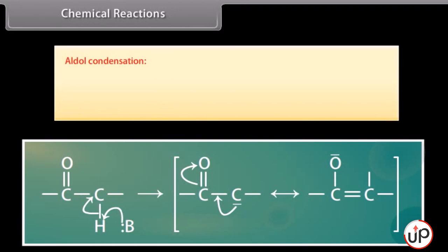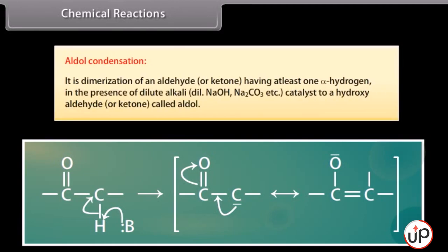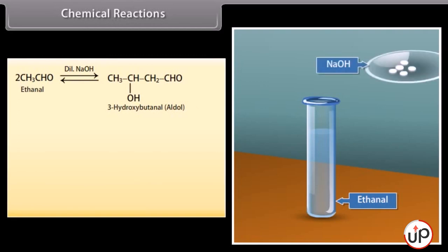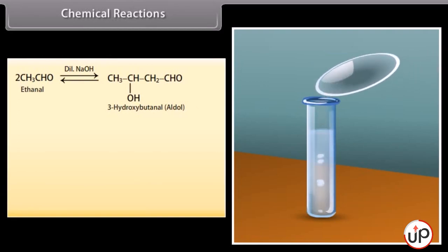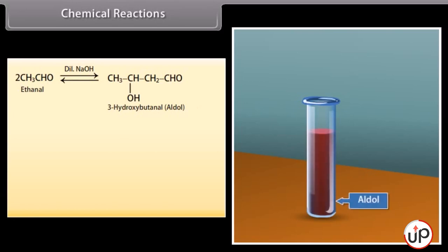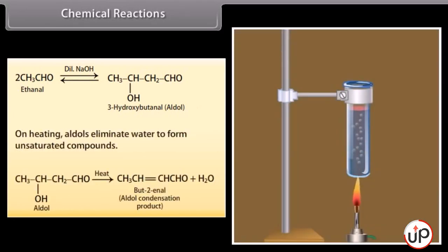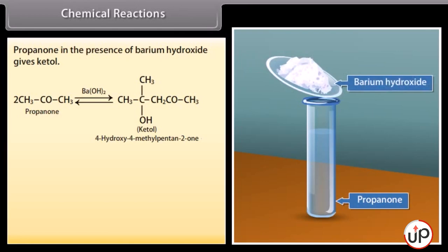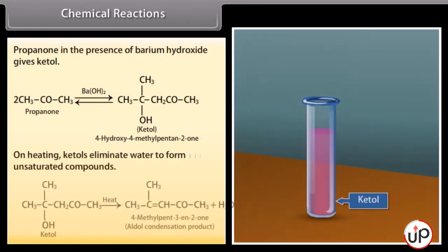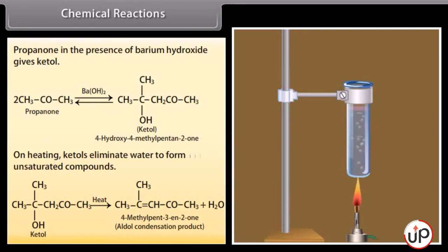Aldol condensation: it is the dimerization of an aldehyde or ketone having at least one alpha-hydrogen in the presence of dilute alkali such as dilute sodium hydroxide, sodium carbonate, etc., to form a hydroxy aldehyde or ketone called aldol. Ethanol in the presence of dilute sodium hydroxide undergoes condensation to form a syrupy liquid known as aldol. On heating, aldols eliminate water to form unsaturated compounds. Propanone in the presence of barium hydroxide gives ketol, which on heating also eliminates water to form unsaturated compounds.